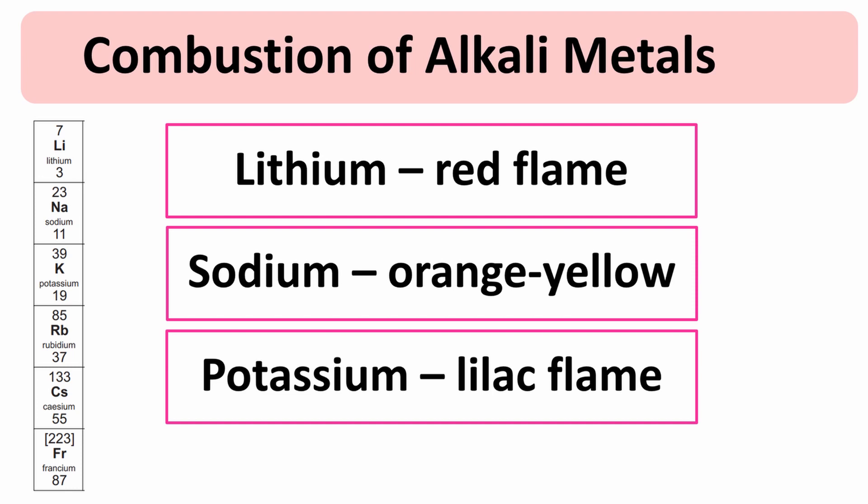Remember the chemical equations for the combustion reactions and for the tarnishing is exactly the same because they're both alkali metals reacting with oxygen. It's just with the combustion you also have flame colours, so red, orange yellow, lilac depending on which alkali metal it is. Okay so that's the end of this video, thanks for watching.